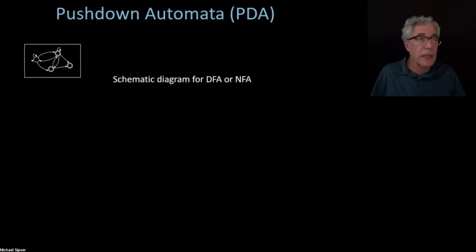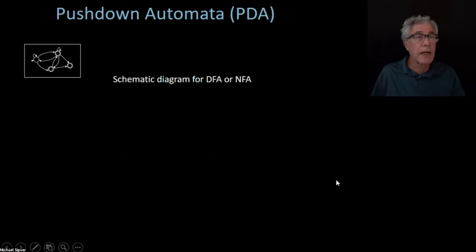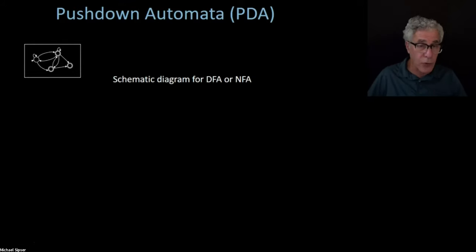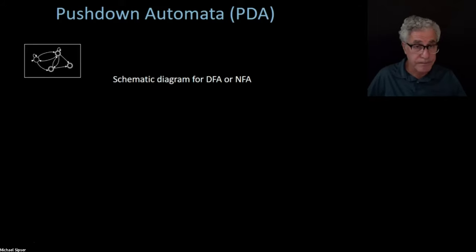So that's ambiguity. Now let's introduce pushdown automata, which is going to be our automata counterpart for context-free languages.